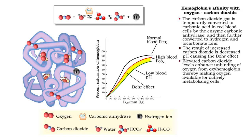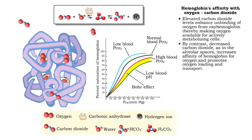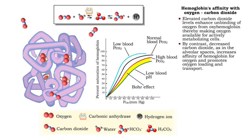Elevated carbon dioxide levels enhance unbinding of oxygen from oxyhemoglobin, thereby making oxygen available for actively metabolizing cells. By contrast, decreased carbon dioxide, as in the alveolar spaces, increases the affinity of hemoglobin for oxygen and promotes oxygen loading and transport.